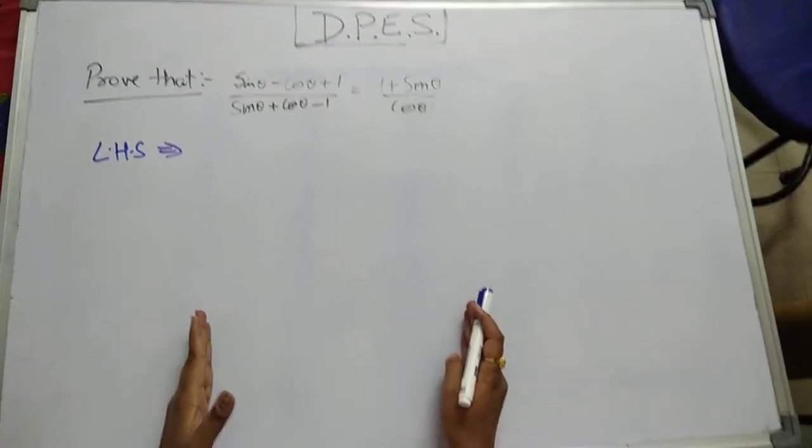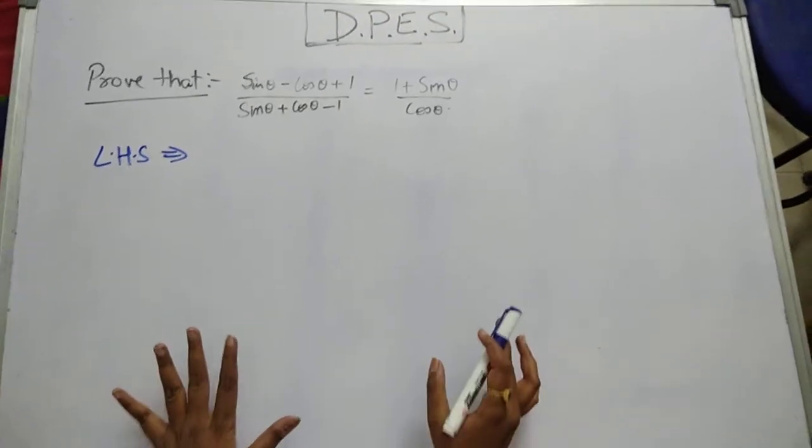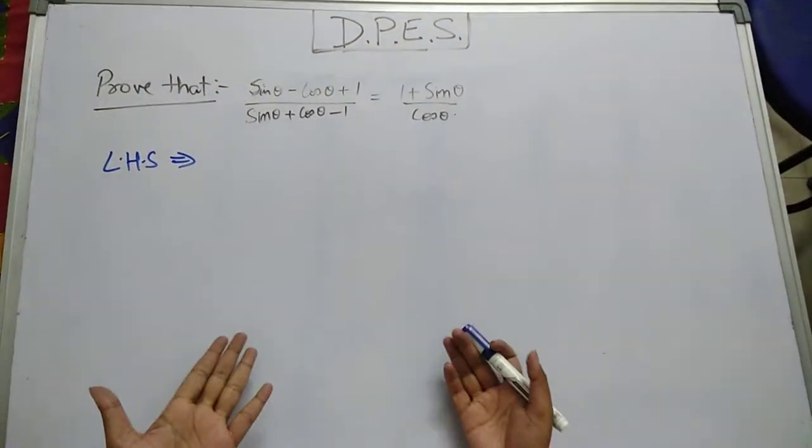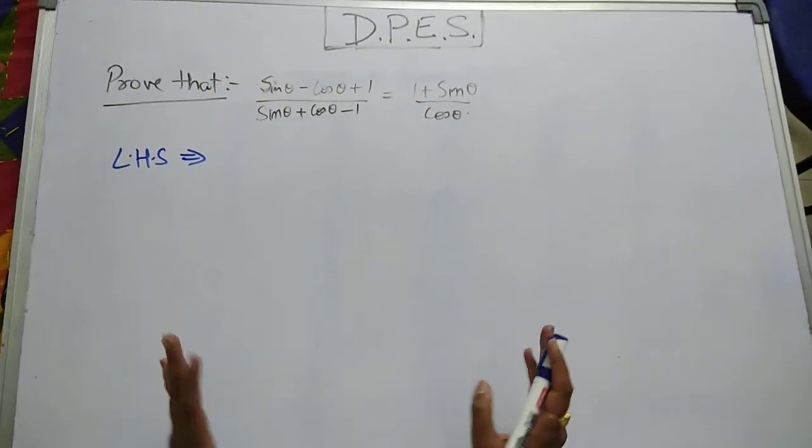This question will be an example of how to solve proof questions in the trigonometric identities part.